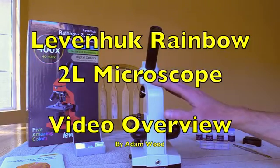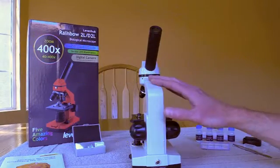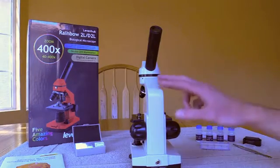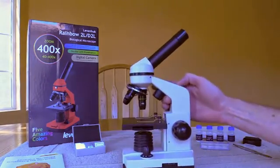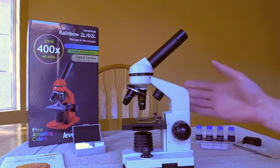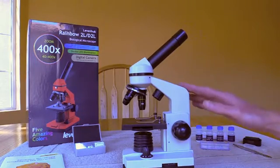Well, hi there. I'd like to show off and give my opinions of the Levenhook Rainbow 2L. There's also the D2L that comes with a digital camera. You can see it listed there on the box. This is the 2L model that doesn't come with the camera. It comes in five different colors. This is their Moonstone color.